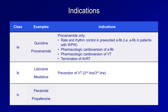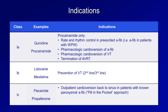Flecainide and propafenone are used for outpatient cardioversion of AFib. Some patients with symptomatic paroxysmal AFib will be prescribed these drugs to use on an as-needed basis. They carry the drug around in their pocket, and if they feel themselves jump from sinus into AFib, they take one of these on their own, which can lead to conversion back to sinus rhythm within an hour or two.